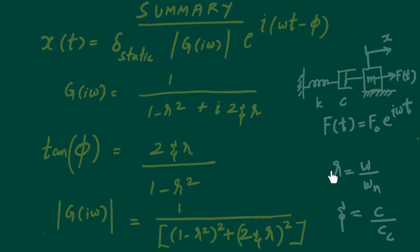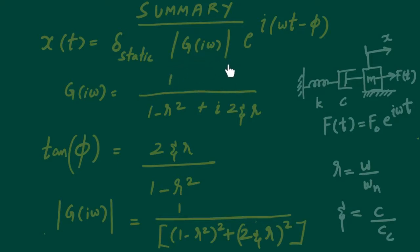Another important thing in harmonic excitation is that there is a magnification factor — a particular quantity by which our static deflection gets magnified. That magnification factor can be found from the expression here. That's what we looked at regarding the response.